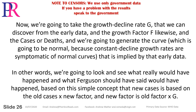Now we're going to take the growth decline rate G — discoverable from the early data — and the growth factor F likewise, along with the cases or deaths, and generate the curve. It will be normal because constant declining growth rates are symptomatic of normal curves, as implied by that early data. In other words, we're going to see what really would have happened, and what Ferguson should have said, based on the simple concept that new cases equals old cases times new factor, and new factor equals old factor times G.